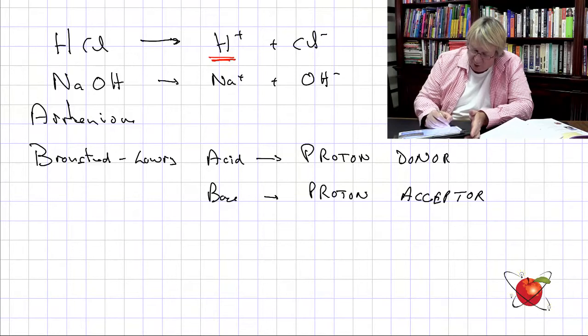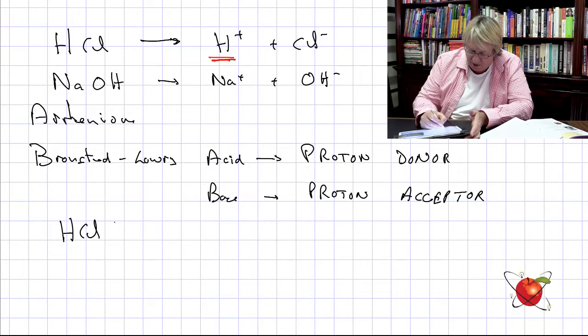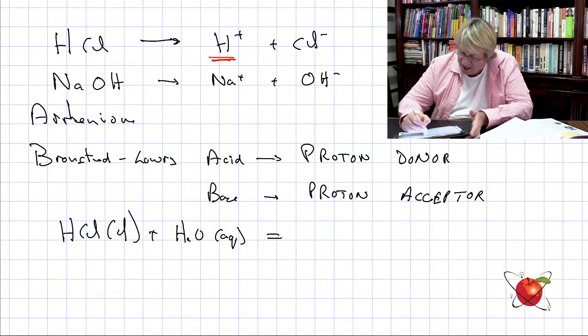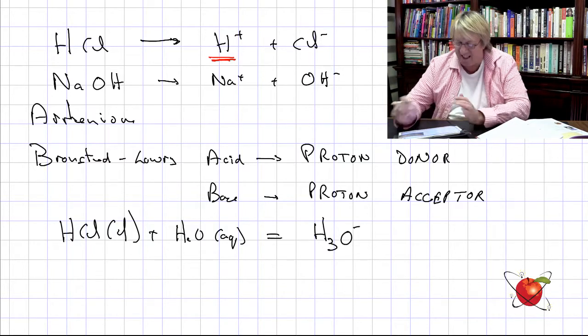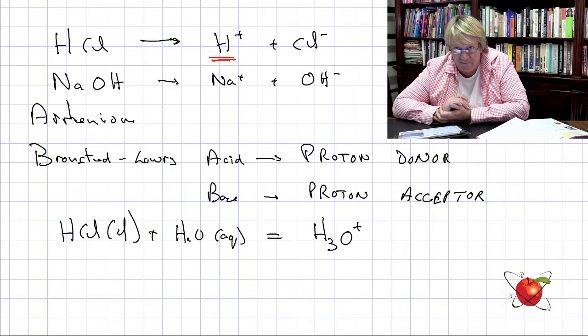We form the hydronium or oxonium ion. We said HCl in liquid form put into H₂O aqueous forms H₃O⁺. The hydronium ion formed because the water and the proton — the proton came along, moved in, and bonded with it. The proton didn't hang around on its own; it went and found someone to bond with. So we form H₃O⁺.